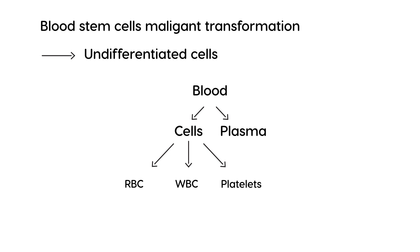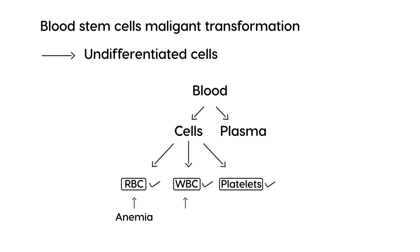Red blood cells are the ones that carry oxygen, and when somebody is anemic, it's referring to a low red blood cell count. White blood cells are the ones that fight infection and help us when we acquire some sort of bacterial or other type of infection. And platelets are the cells that form blood clots and prevent us from bleeding to death.